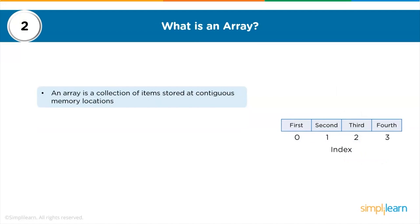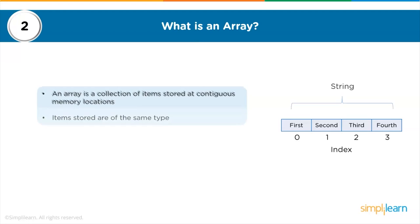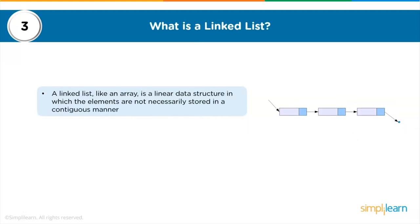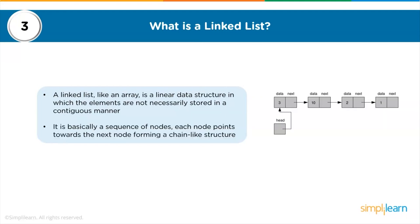The next question is about the linked list. What is a linked list? It is similar to an array, but with some basic differences. Like an array, a linked list is a linear data structure, but elements are not necessarily stored in a continuous manner. A linked list is basically a sequence of nodes where each node points to the next node, forming a chain-like structure.